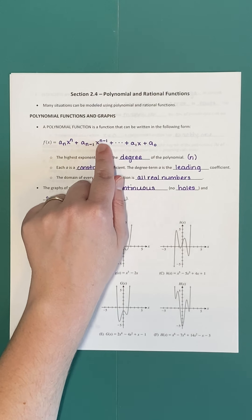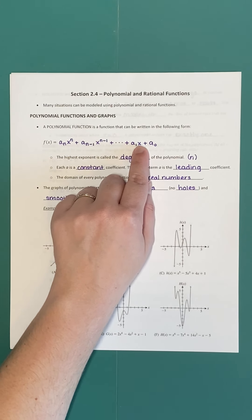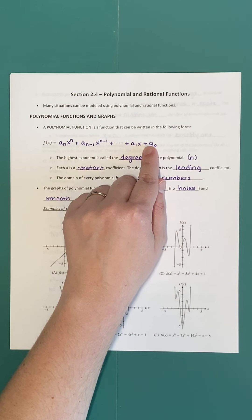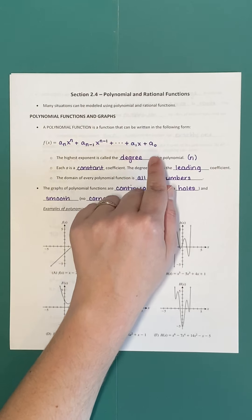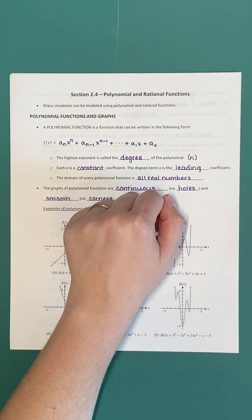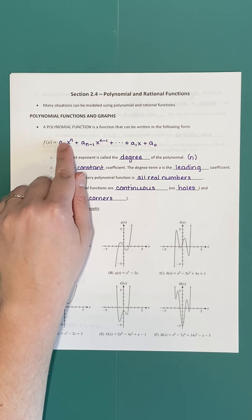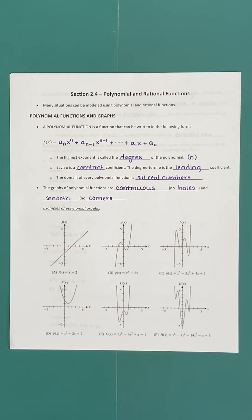Each of the x's has an exponent: the exponent n, the exponent n minus 1, and so on. This particular x doesn't have a written exponent, which means it's an implied exponent of 1. The last term doesn't have an x at all — we could put an exponent of 0, since anything to the 0 power is 1. This last term is what we call a constant term. Now n is going to be an actual number, and it has specific requirements: n must be a whole number and a positive number. Anything where x has a fractional or negative exponent means we're no longer looking at a polynomial function.